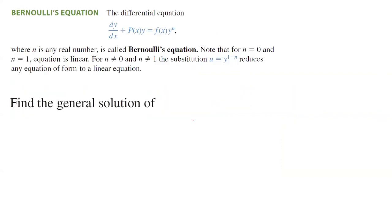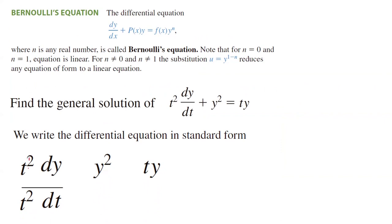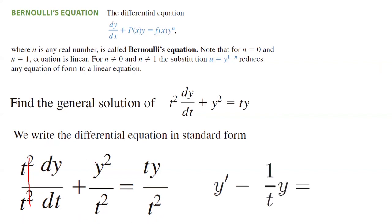For example, find the general solution of this differential equation: t squared dy/dt plus y squared equals t times y. First, write it in standard form by dividing everything by t squared, assuming t is not zero. After simplification, t squared over t squared cancels, and you get y prime minus y over t — bringing the y/t term to the other side gives negative (1/t) times y.